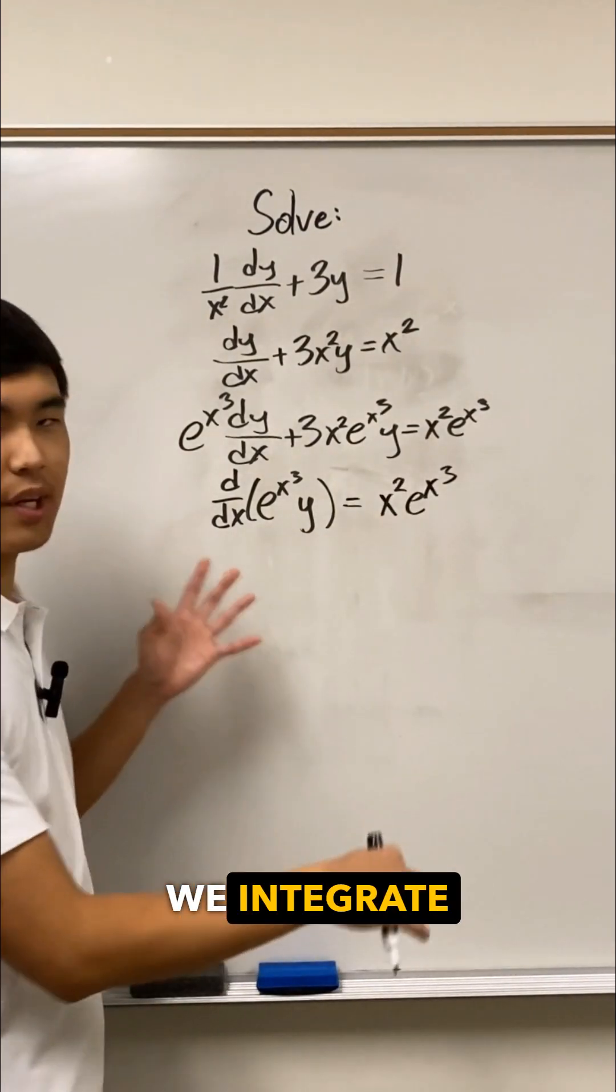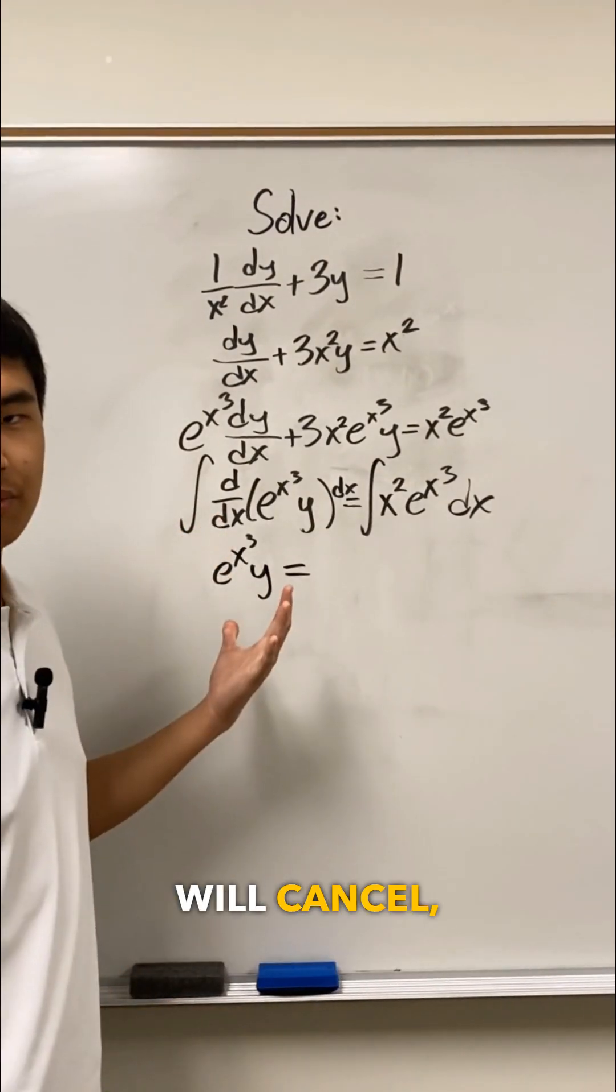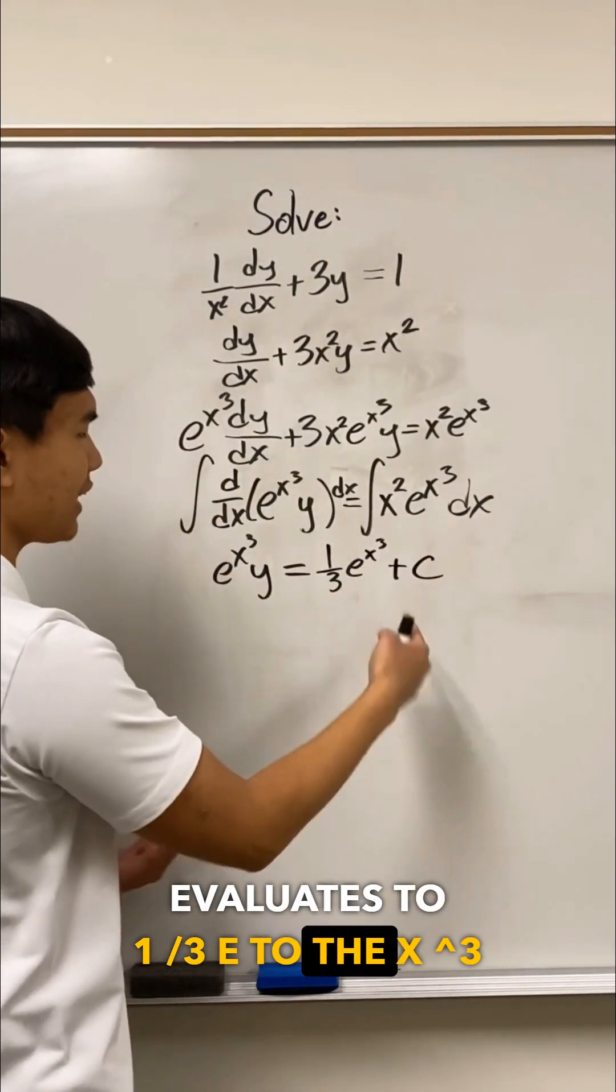And from here, we integrate both sides. On the left, the integral and the derivative will cancel, and the right evaluates to 1 third e to the x cubed plus c.